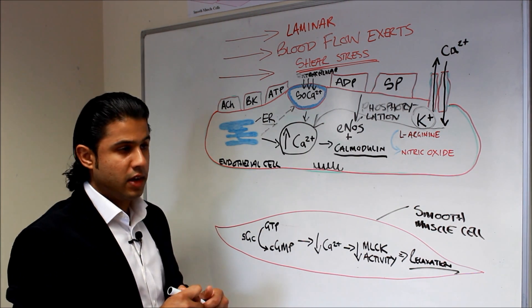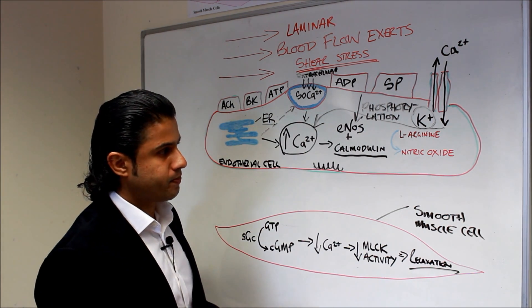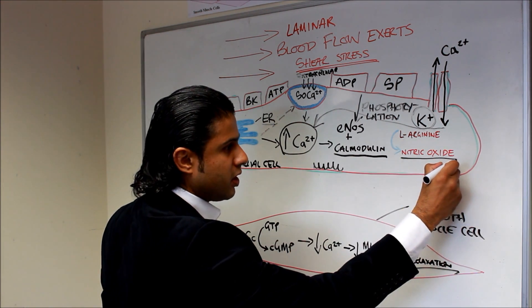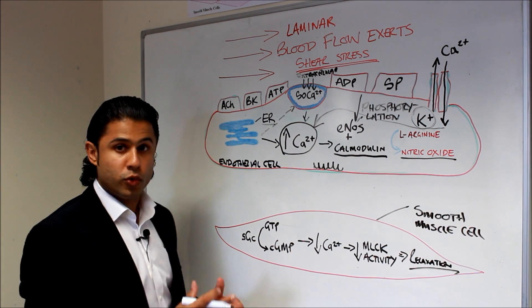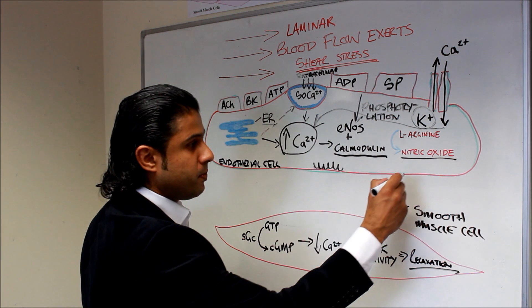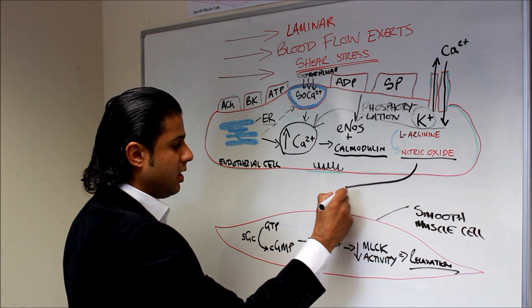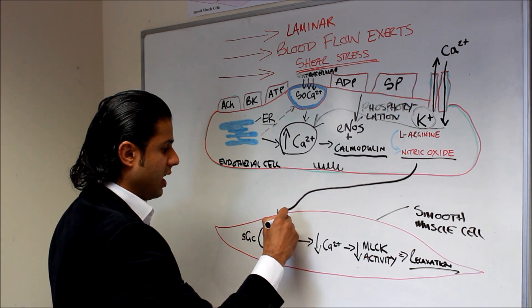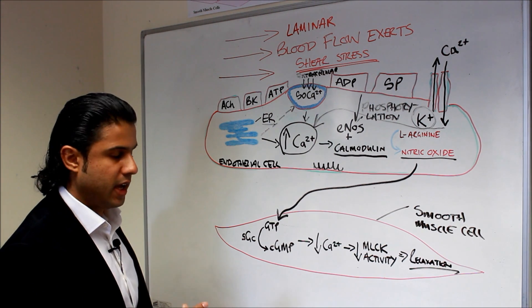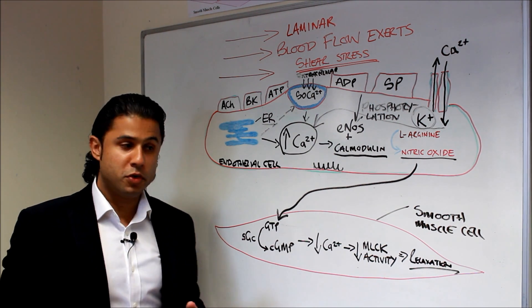Now the next thing that's extremely important is to think about what happens to the nitric oxide to cause vasodilation. Well it must be released out of the endothelial cell and it must enter into the smooth muscle cell. So we're now into the smooth muscle cell.